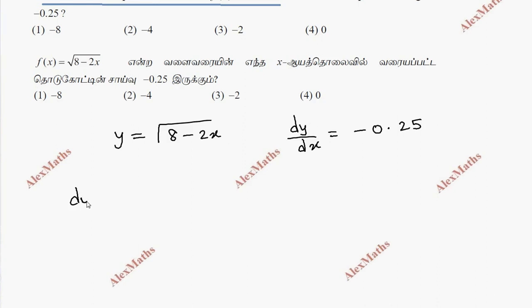Now, the curve equation we differentiate. So dy/dx of the root: differentiation gives 1 by 2 root, chain rule, inside the root we differentiate, 8 is 0, minus 2. But it equals minus 0.25.